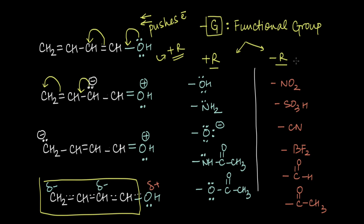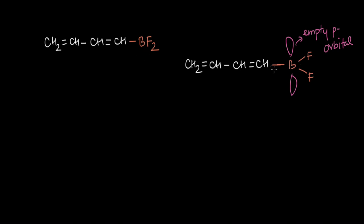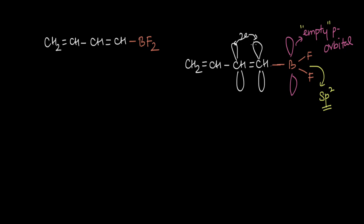-R groups are those groups that pull electrons away from a double-bonded system, thereby decreasing the electron density of the system. Let's see how this happens by adding the BF2 group. Whenever we have a boron atom with three bonds attached, it is sp2 hybridized, which by default gives it an empty p orbital. This empty orbital is connected to a pi bond, and again these pi electrons are dynamic — they keep moving around.